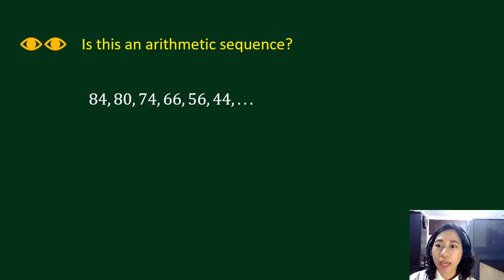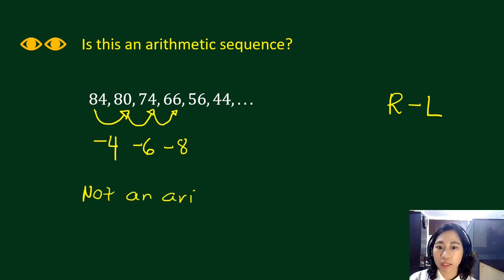Let's look at another example. Is this arithmetic? So 84 minus 80, that's minus 4. 80 to 74, reduced by 6. 74 until 66, reduced by 8. So this means that this is not an arithmetic sequence, because the numbers being subtracted are not the same.